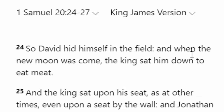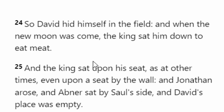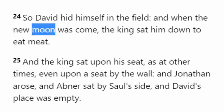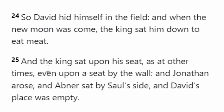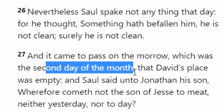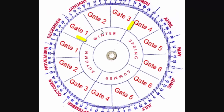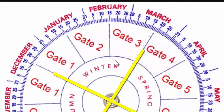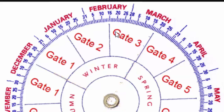The current season that we're in is winter, which would have started with the new moon sometime after December the 17th. Now, it's important to understand how the moon plays a part in all of this. We learn in scripture all throughout the Bible, but particularly in 1 Samuel chapter 20, that the new moon is actually the first day of the month. You see that in verse 24, talking about the new moon. And then in verse 27, it says that the day after the new moon is the second day of the month.